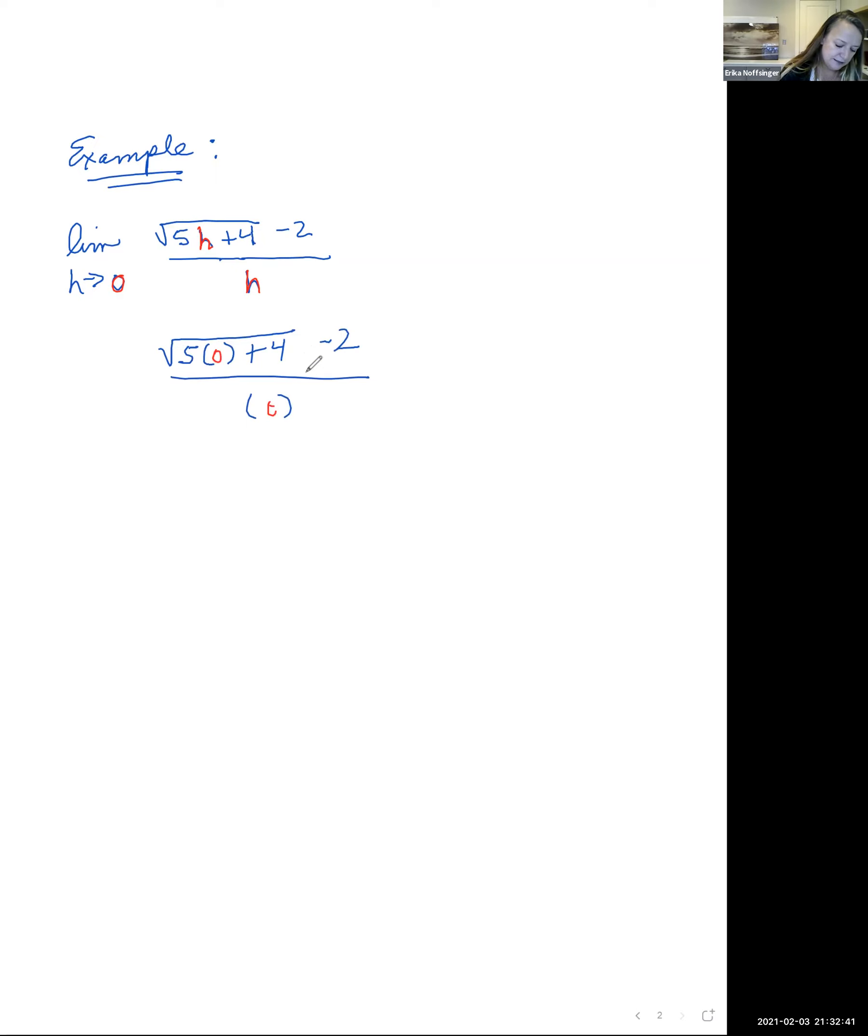So doing this, I have 5 times 0, which is 0 plus 4 underneath the radical. And so this is giving me the square root of 4 minus 2 all over 0. Well, square root of 4 is 2, so we get 2 minus 2 all over 0, which is 0 over 0.